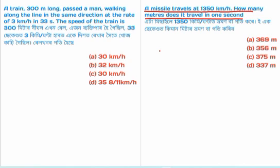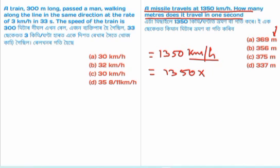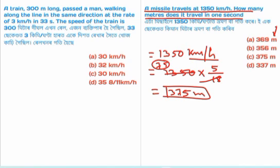The speed is 1350 km per hour. To find meters per second, we multiply by 1000 divided by 3600, which is 5/18. So 1350 multiplied by 5/18 gives us 375 meters per second. That is how many meters the missile covers in one second.